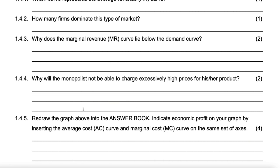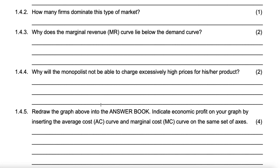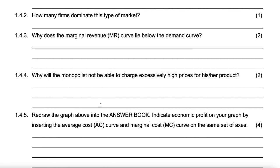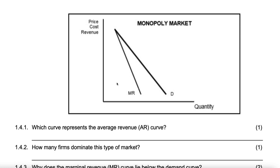The next question says: redraw the graph and indicate economic profit on your graph by inserting the average cost curve and the marginal cost curve on the same set of axes. Once you insert MC, find the point where it intersects MR — that gives your quantity. Continue straight up until you touch the demand curve — that's your price. Then draw an average cost curve below that price. Shade the area in between, and that's your economic profit.